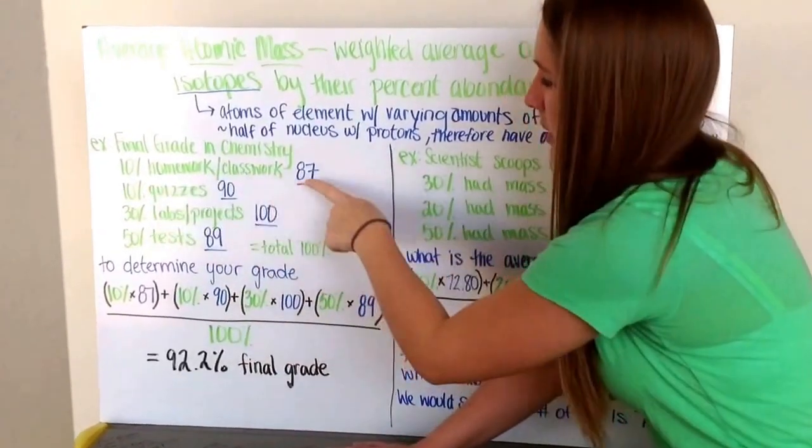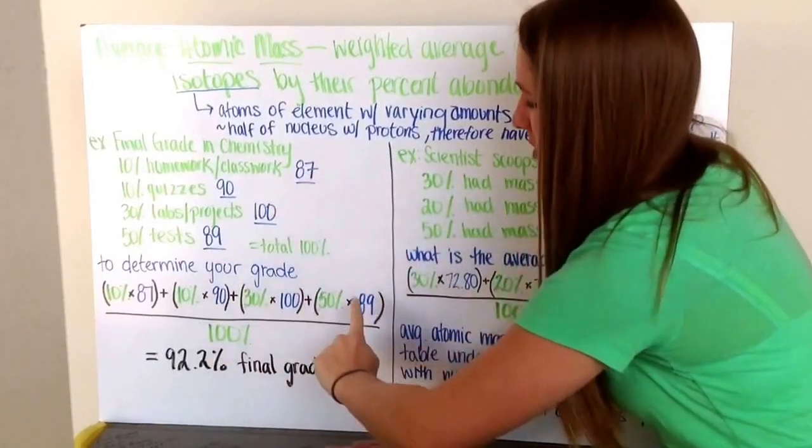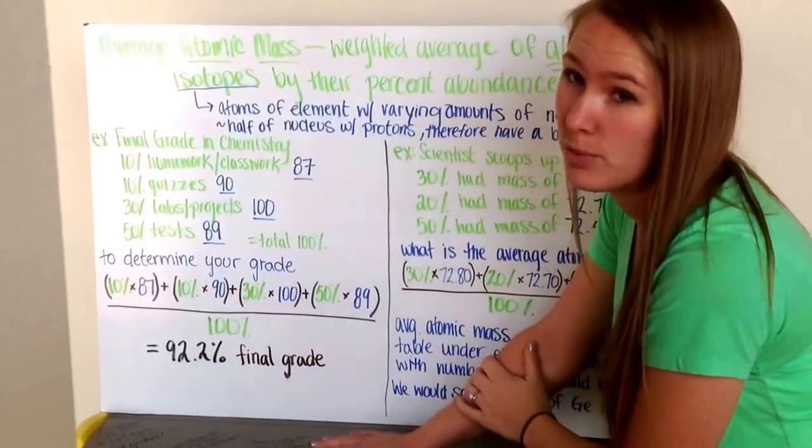We take our percent times what we got, add those together, and divide by our total percent of 100%.